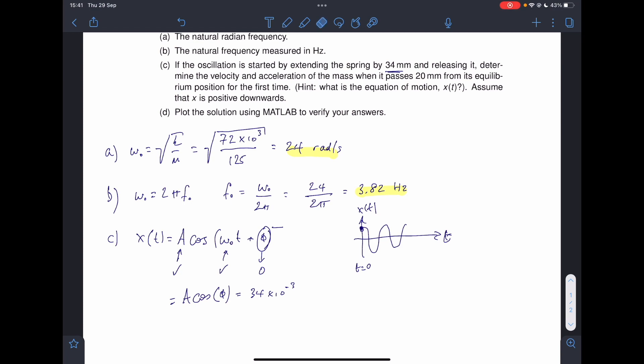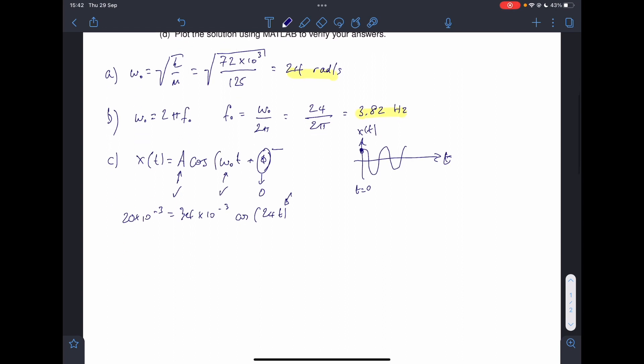And you can also just do it by thinking about it. So my equation now looks like we've got 34 times 10 to the minus 3 cosine of omega nought, sorry, of 24 t. That's my equation for displacement. Obviously, I've been given the displacement of 20 millimetres. There's my equation. What's my unknown? T. So we can solve for this for T.